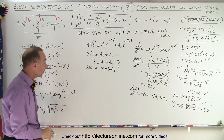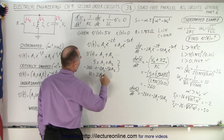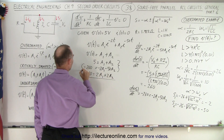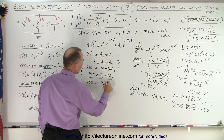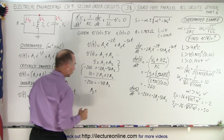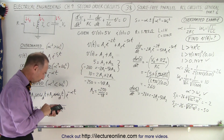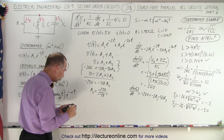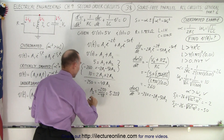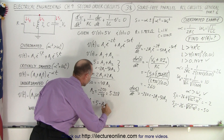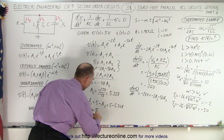Now we have two equations and two unknowns to solve simultaneously. Multiplying the first equation by 2 gives 10 equals 2A1 plus 2A2. Adding this to minus 260 equals minus 2A1 minus 50A2, the A1 terms drop out, leaving minus 250 equals minus 48A2. Therefore A2 equals minus 250 divided by minus 48, which equals 250 divided by 48, equal to 5.208. And since A1 equals 5 minus A2, A1 equals 5 minus 5.208, which equals minus 0.208.